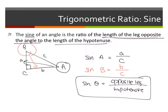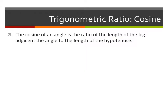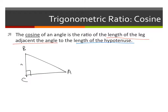Cosine goes the same way. The cosine of an angle is a ratio of the length of the leg adjacent to the angle over the length of the hypotenuse. Let's recreate triangle ABC. Cosine of angle A: the side adjacent to A is b, over the hypotenuse C. The hypotenuse will always be the hypotenuse.